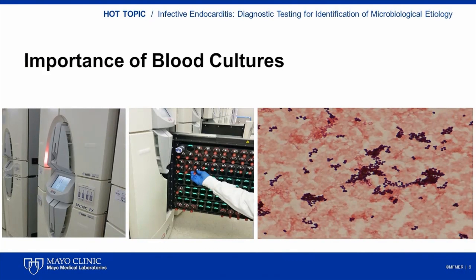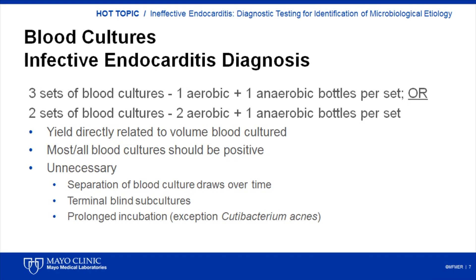Blood cultures should be drawn prior to administration of antibiotics. Conventionally, three sets of blood cultures, with each set including one aerobic and one anaerobic bottle, are collected. Alternatively, two sets may be collected, with two aerobic and one anaerobic bottles per set. Yield of blood cultures is directly related to the volume of blood cultured, with properly filled blood culture bottles being essential. Most, if not all, blood cultures from patients with endocarditis caused by microorganisms able to grow in blood culture systems should be positive, provided they are appropriately collected and drawn prior to the administration of antimicrobial therapy. Separation of blood culture draws over time is unnecessary. Standard blood culture incubation times of five days are adequate for recovery of almost all cultivatable causes of endocarditis, including Candida species.